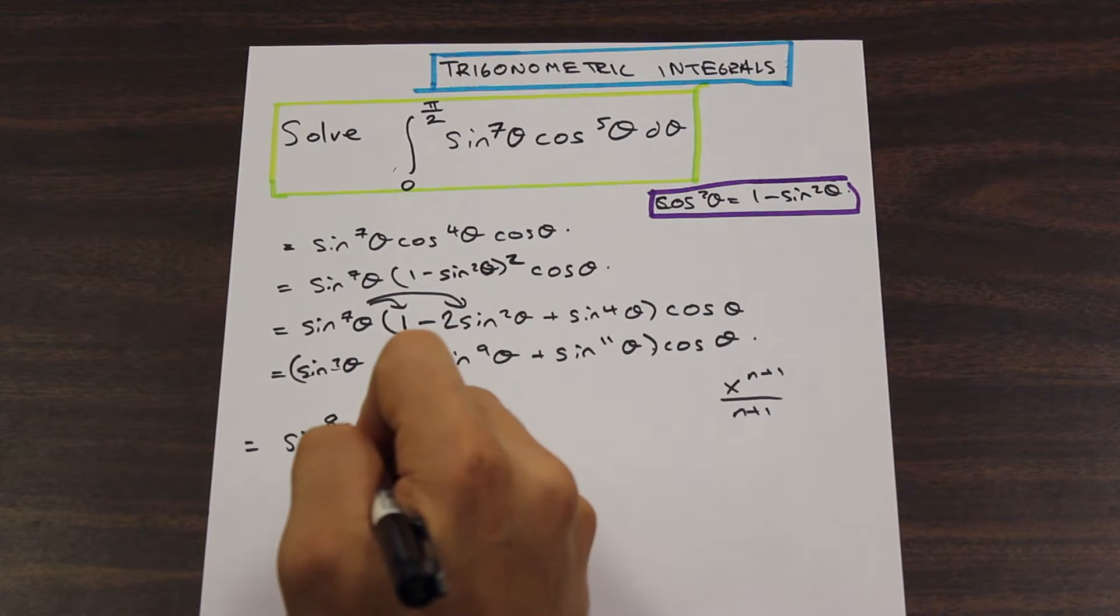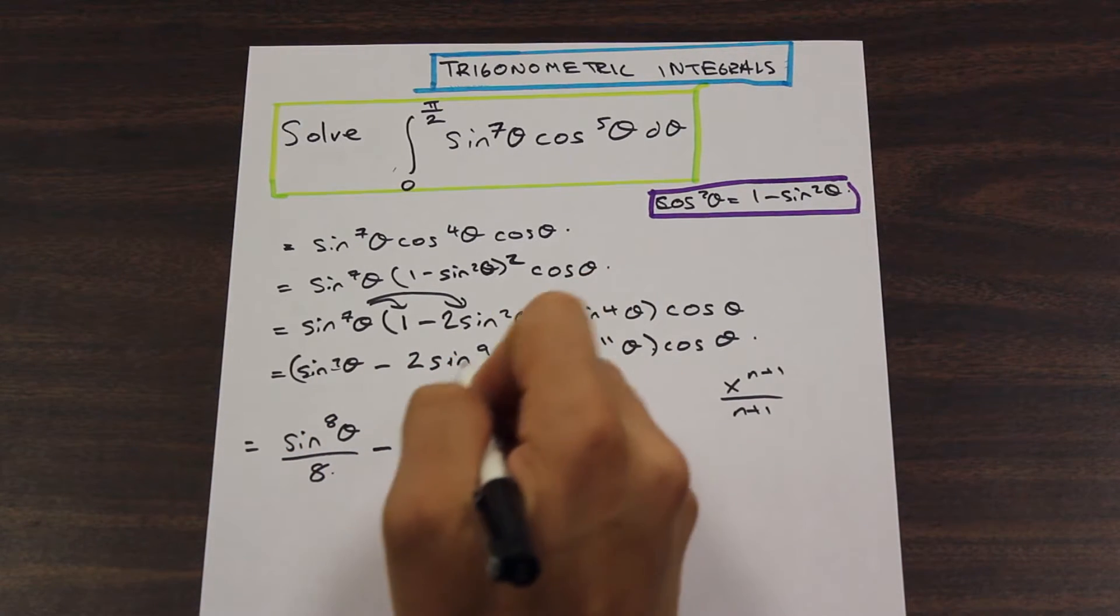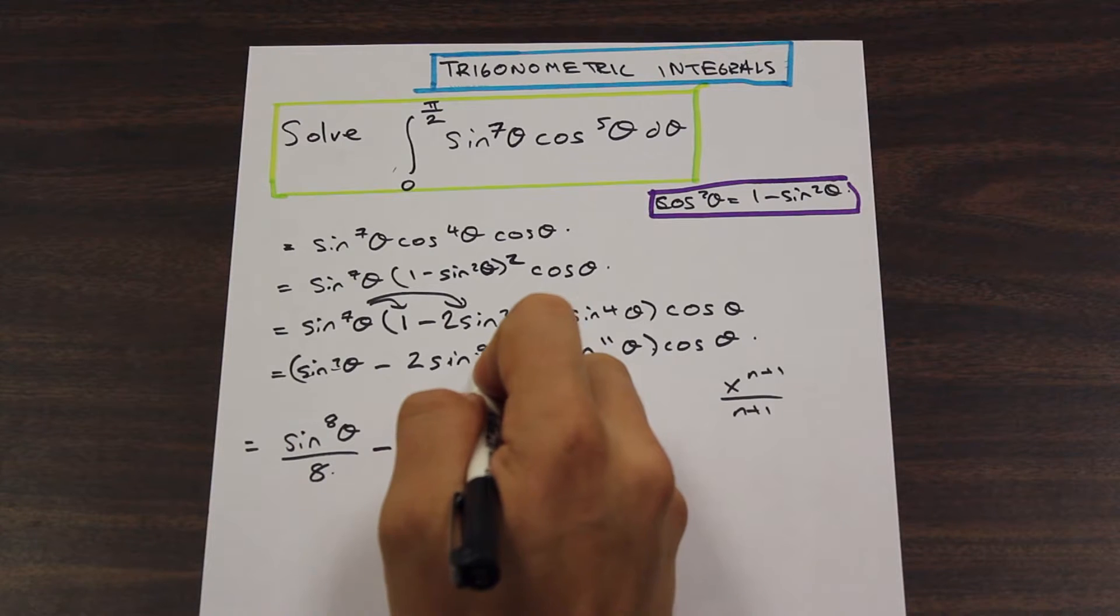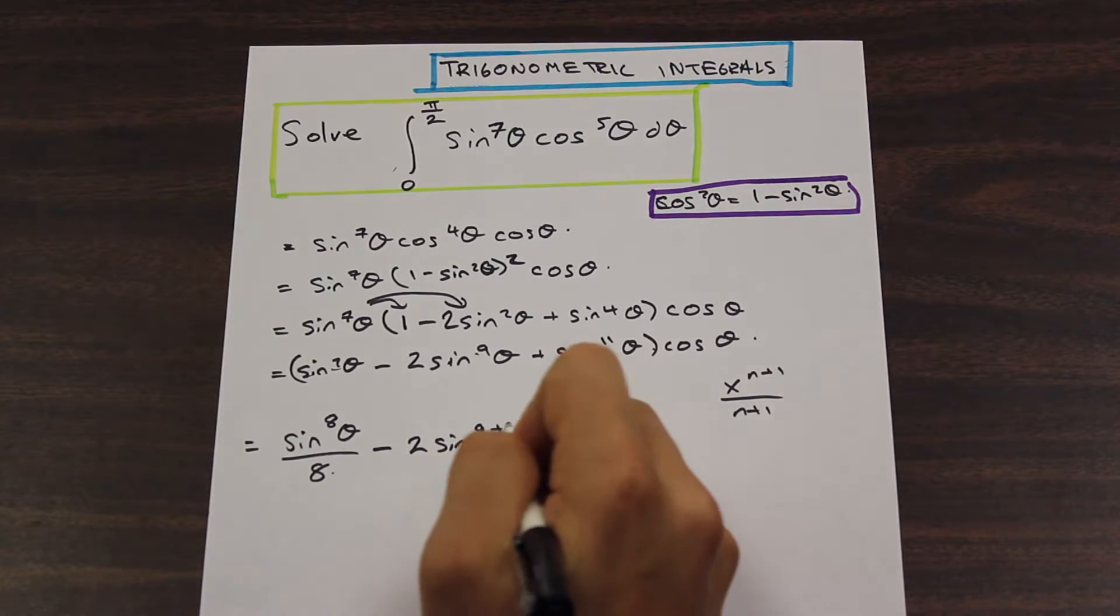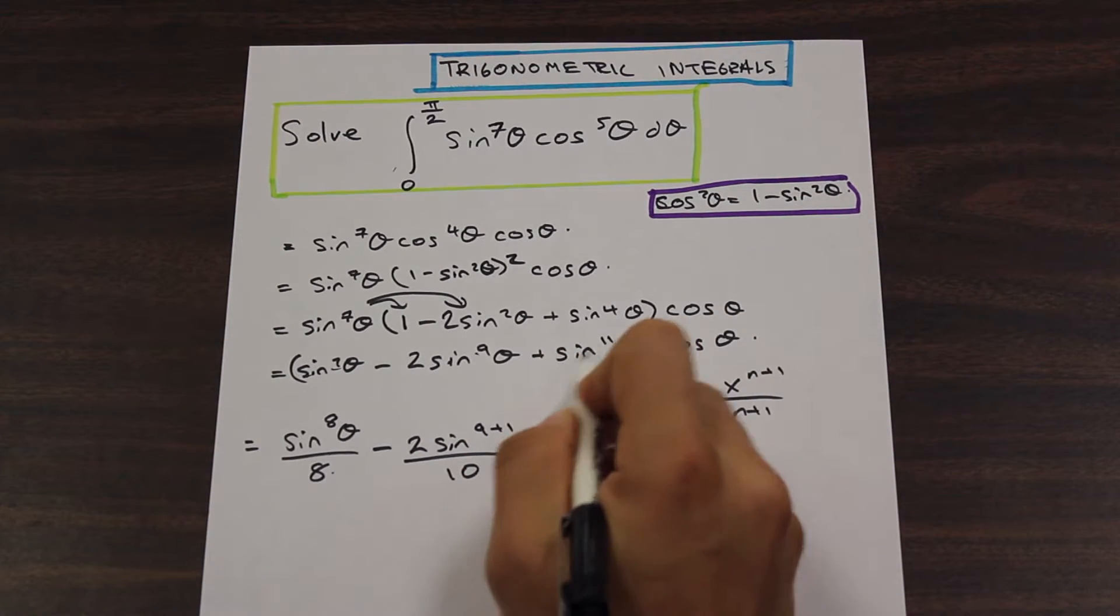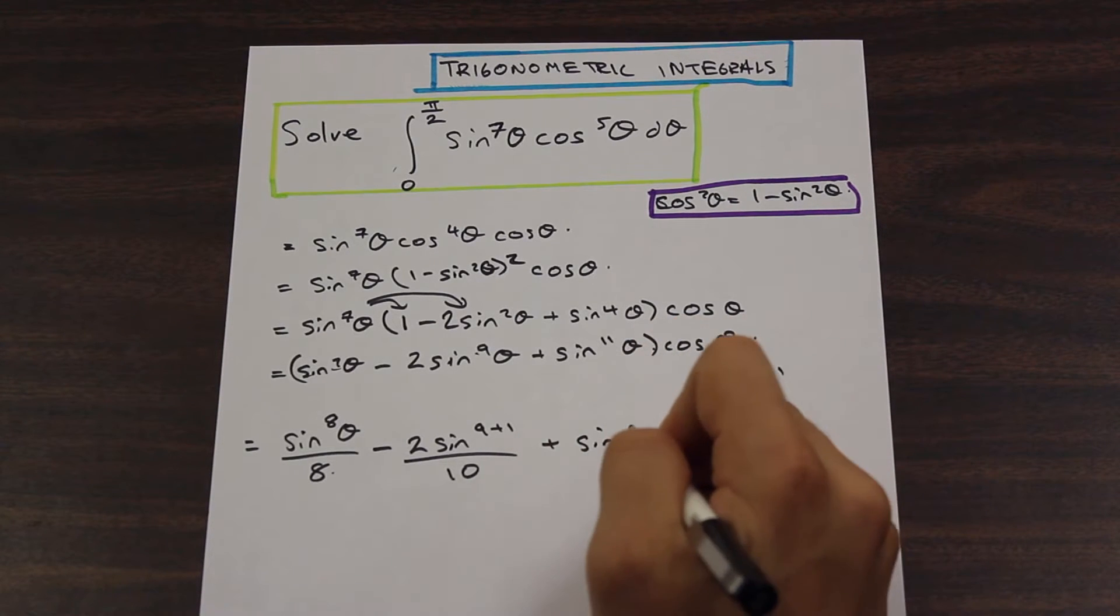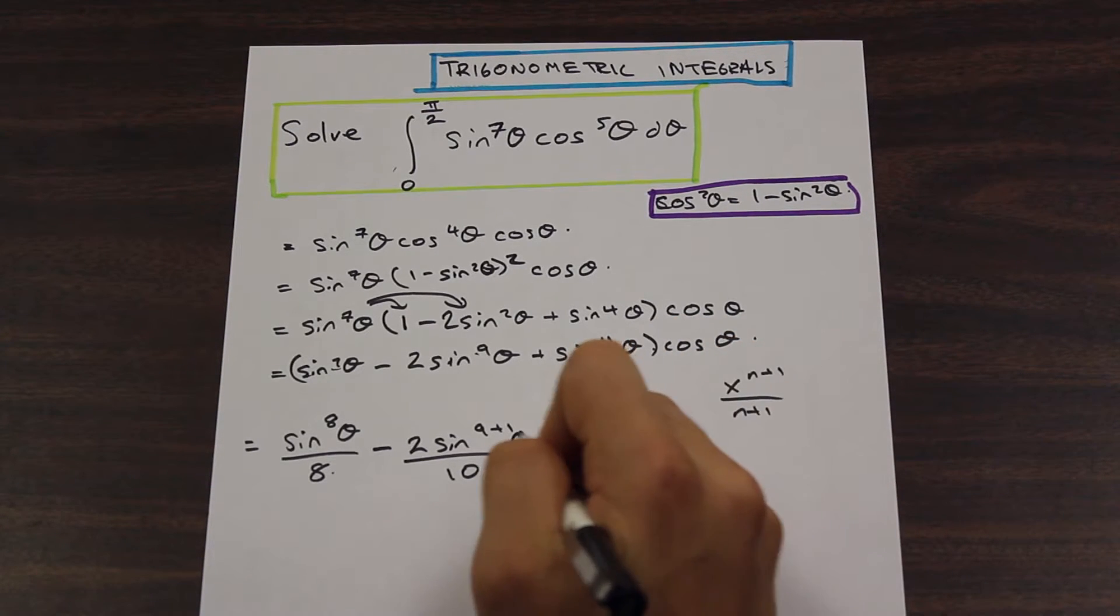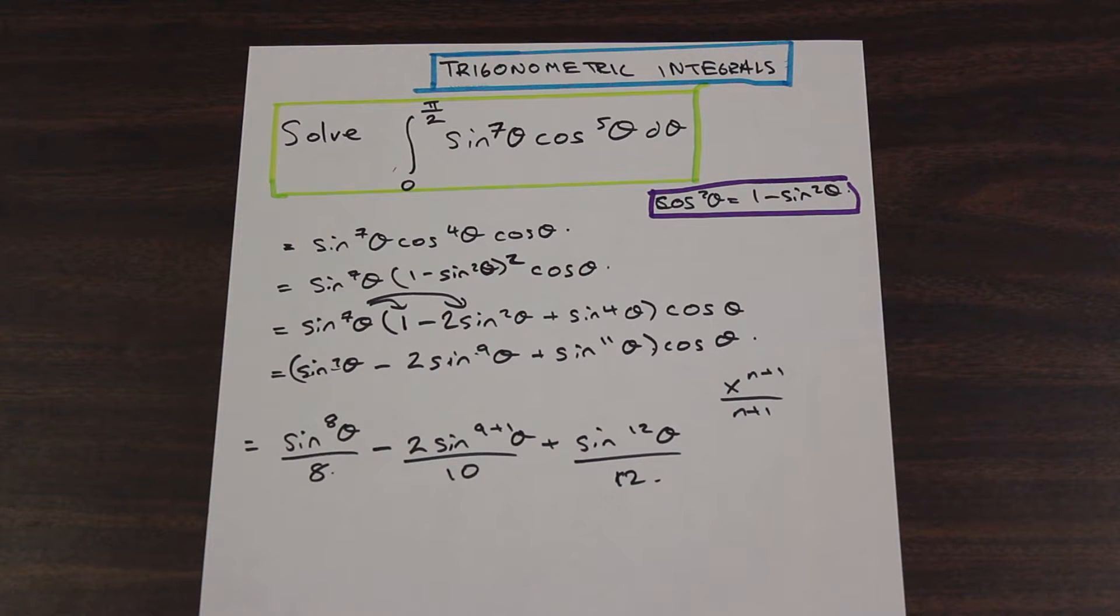Applying the power rule to here, we have sine to the 8th theta over 8, minus we have sine n plus 1, so 9 plus 1, 9 plus 1, which is 10, over 10 plus, and then we have sine 11 plus 1, which is 12 theta over 12.